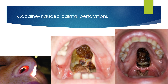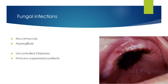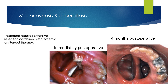Cocaine sniffing may cause local ischemic necrosis, which will induce serious palatal perforation. If surgical closure fails, prosthetic obturation can be a very successful solution. Maxillary necrosis may also occur due to infections like mucormycosis and aspergillosis, which may affect patients with uncontrolled diabetes and immunosuppressed patients. Treatment requires extensive resection combined with systemic antifungal therapy.